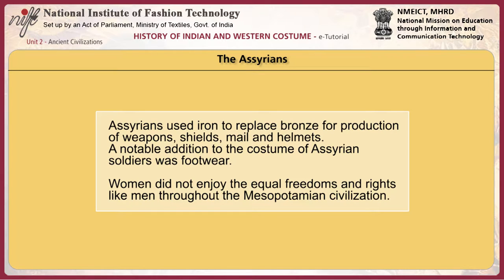Assyrians used iron to replace bronze for production of weapons, shields, mail and helmets. A notable addition to the costume of Assyrian soldiers was footwear — several varieties of shoes ranging from sandals to boots were designed for the military and royalty. Women did not enjoy equal freedoms and rights like men throughout the Mesopotamian civilizations. They had strict costume regulations, like requiring a veil in public.